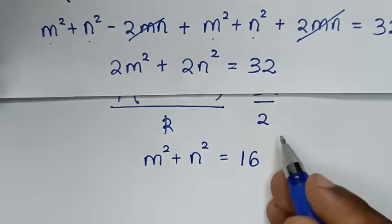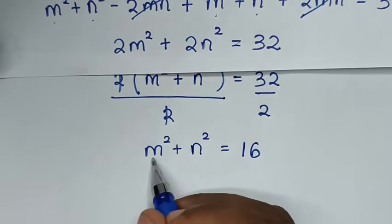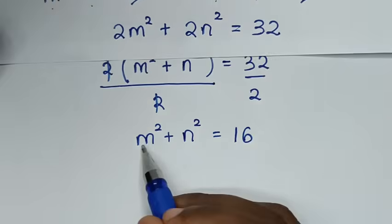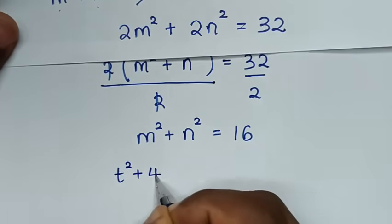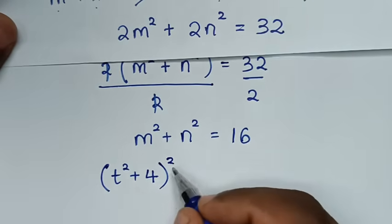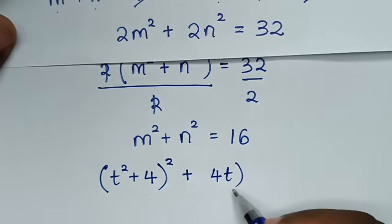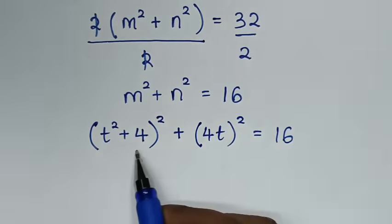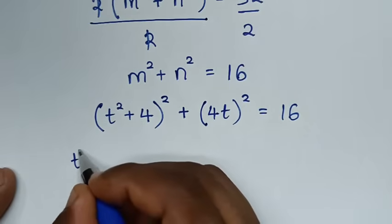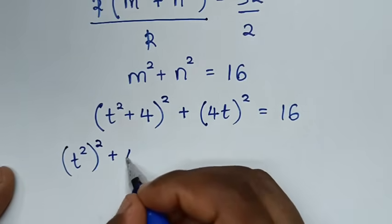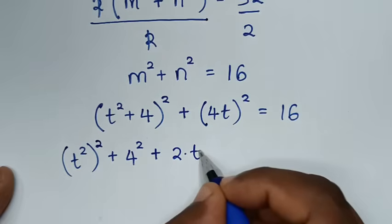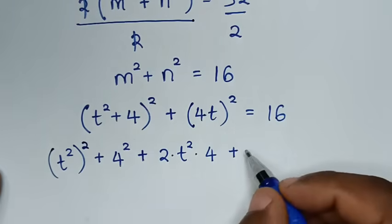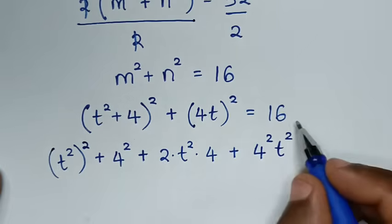Recalling that m = t² + 4 and n = 4t, we substitute back: (t² + 4)² + (4t)² = 16. Expanding (t² + 4)²: t⁴ + 16 + 8t². Expanding (4t)²: 16t².